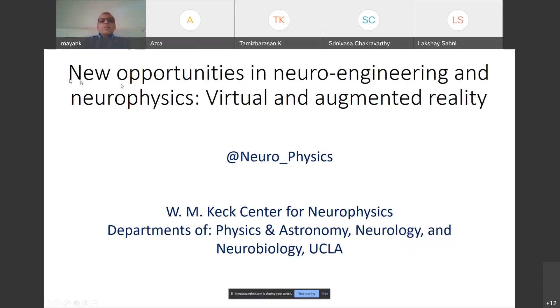So what are the new things that one can do in neuroengineering and neurophysics for people who are engineers or physicists? Of course, neuroscientists can do a lot. And in particular, for the last 10 years we have been doing a lot of research using virtual and augmented reality.